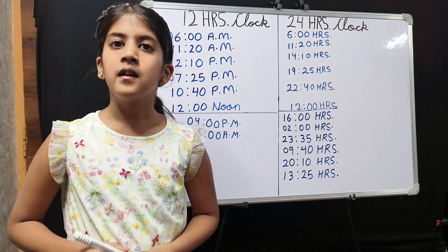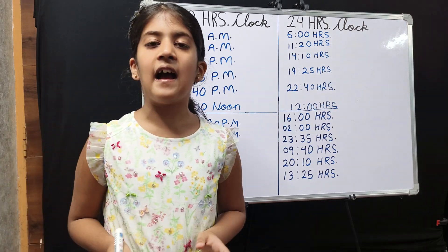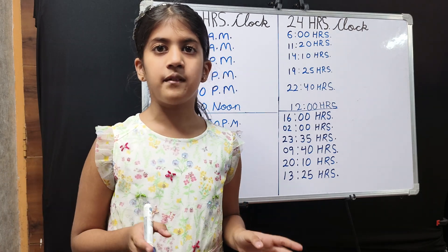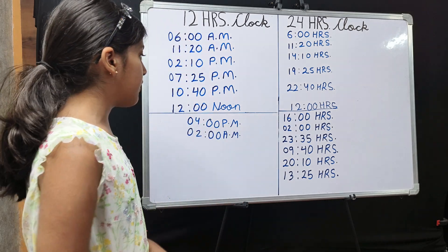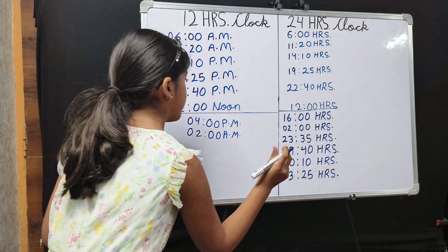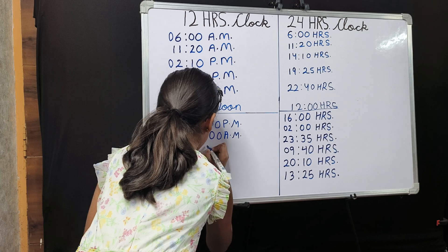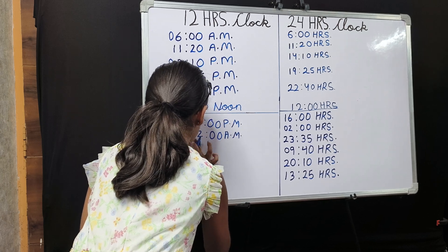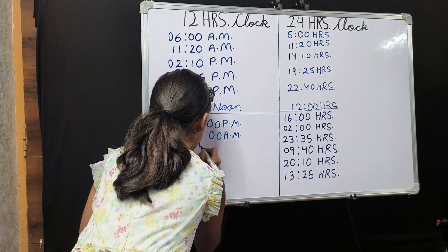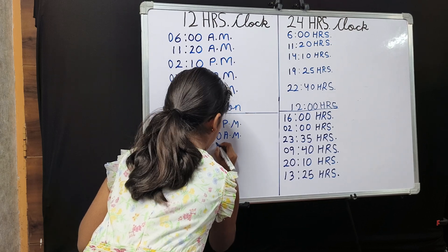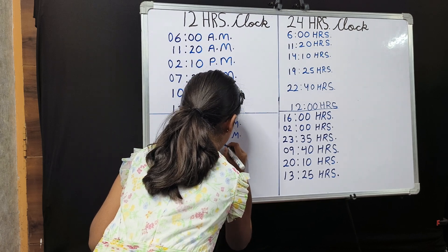2335 hours. In 2335 hours, 23 is the hours from which we can minus 12. So 23 minus 12 is 11, and I will write 35 as it is. My answer is 11:35 PM.